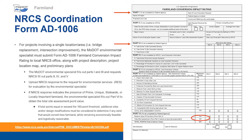If total points equal or exceed the 160-point threshold, additional sites and/or design modifications must be considered to determine if any exist that would convert less farmland, while remaining economically feasible and logistically reasonable. If the value equals or exceeds 160, alternative design considerations should be made to avoid or minimize impacts to farmland resources. In that case, the MoDOT Environmental Specialist will also complete part 7 and submit the form back to NRCS for its records. The Environmental Specialist will upload the NRCS response to the RES.